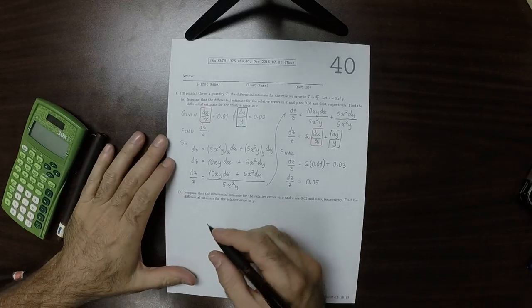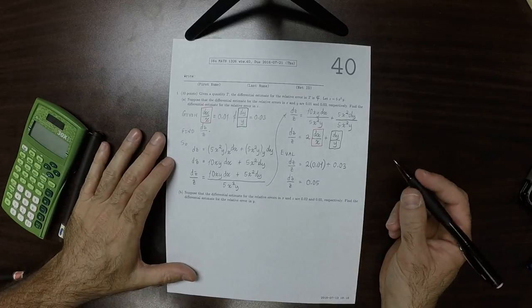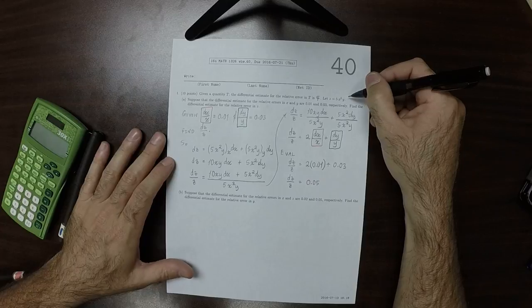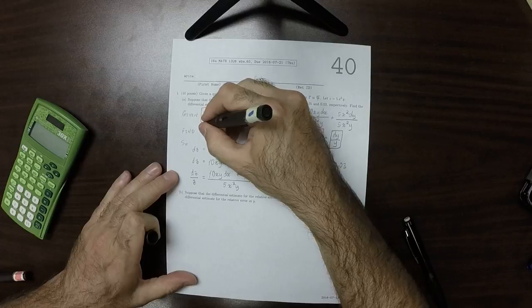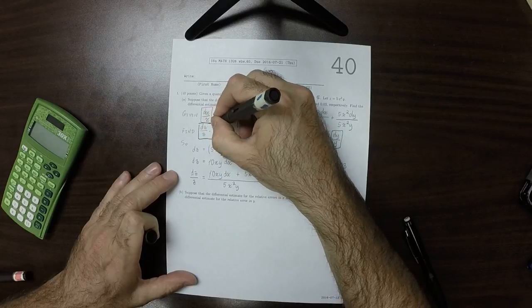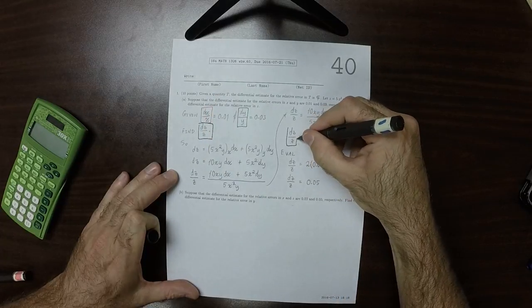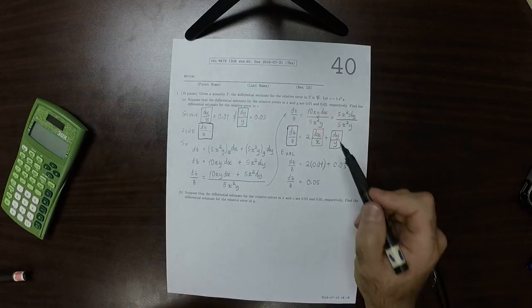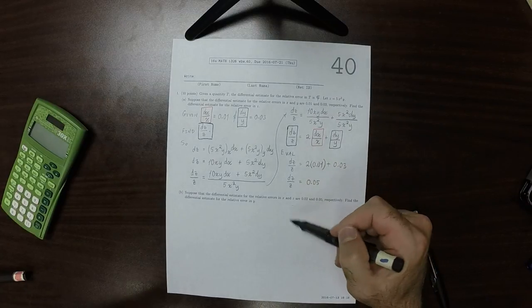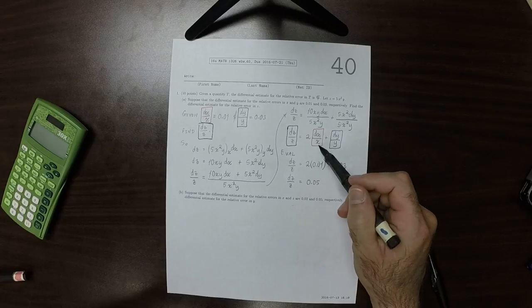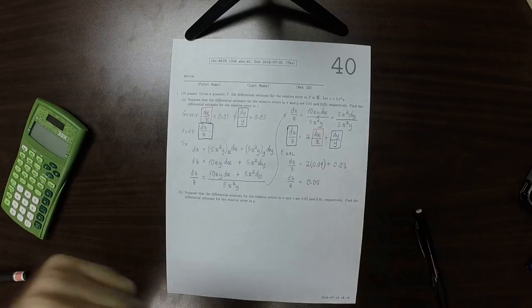So now it's the same kind of deal. It's the same z, except now in part a, you are given the red and the green parts and asked to find the blue. In part b, you're given the red and the blue parts and asked to find the green.